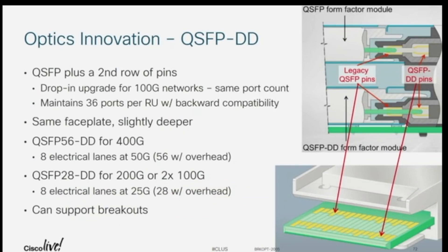This diagram shows the double density with two rows of contacts. In gray is the connector sitting on the board of the equipment. You can plug a QSFP into that — the card edge goes in deep enough for the first row of contacts to engage. With the Double Density module, it's longer with two sets of contacts — it goes deeper into the connector so you get the extra row. So you can have a system built around QSFP-DD today, plug 100 gig optics into it, and it will work. This backwards compatibility lowers all the technology transition risks.